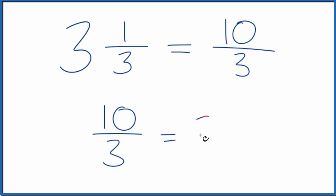3 goes into 10 three times with 1 left over. We bring the denominator across, 3 and 1/3. And that's what we had when we started out.